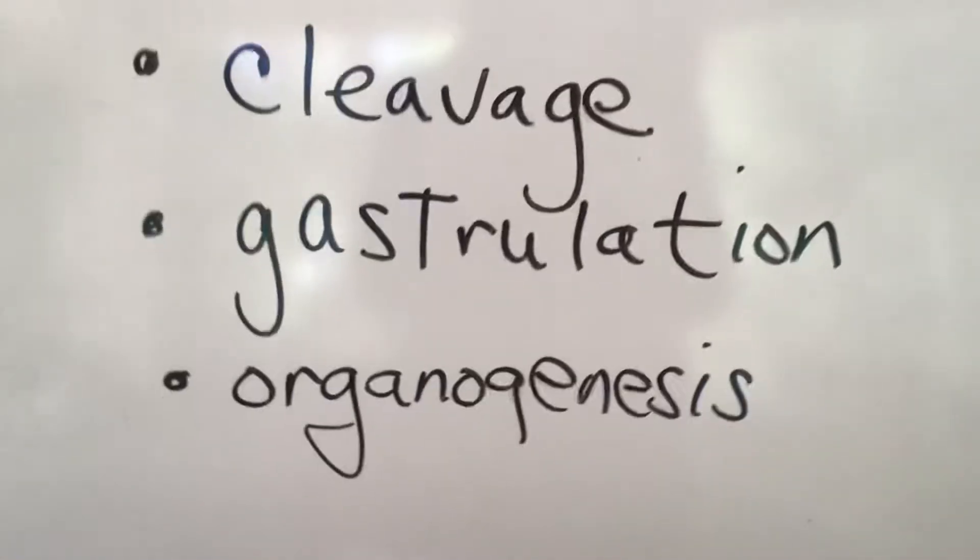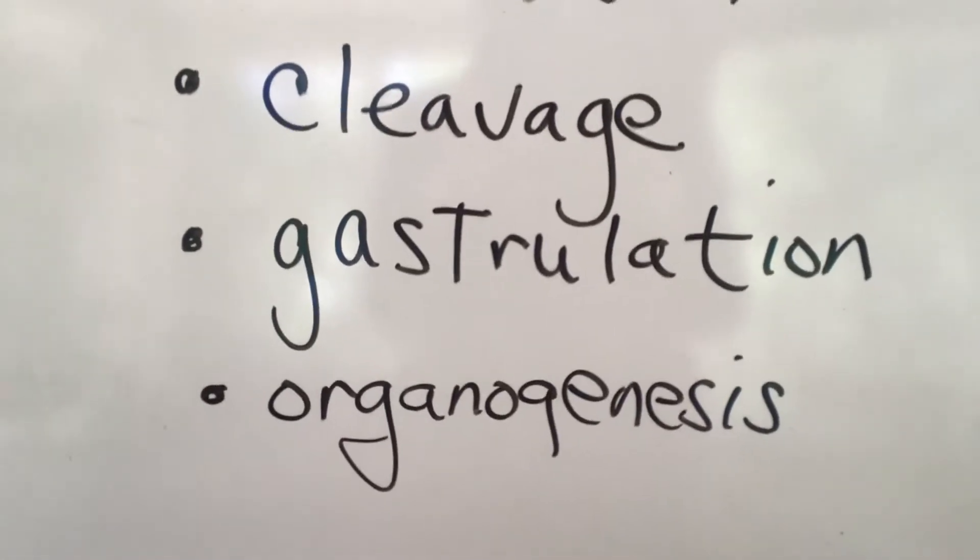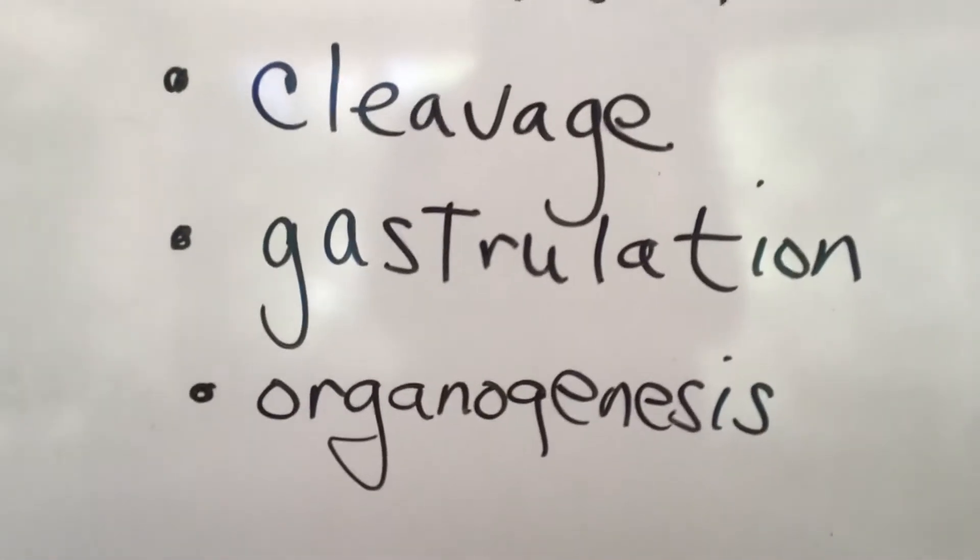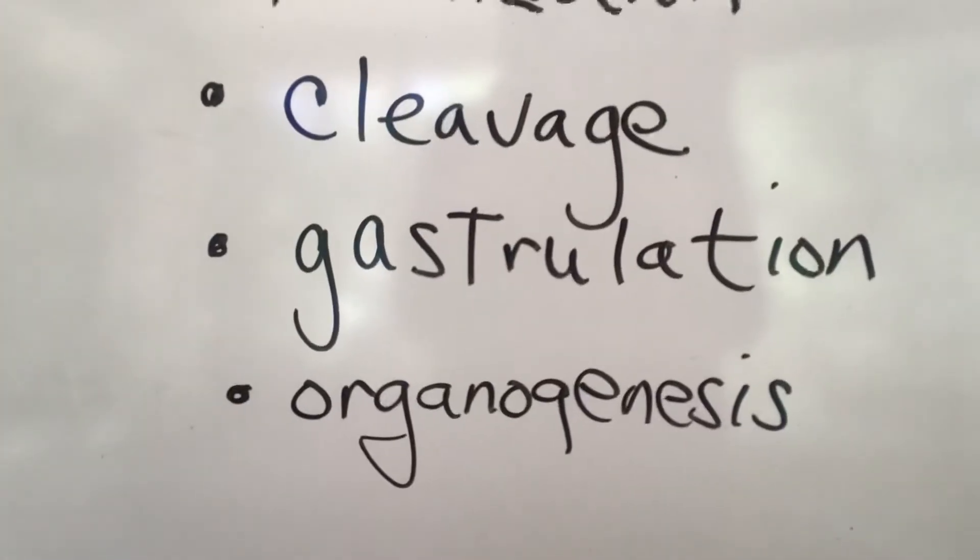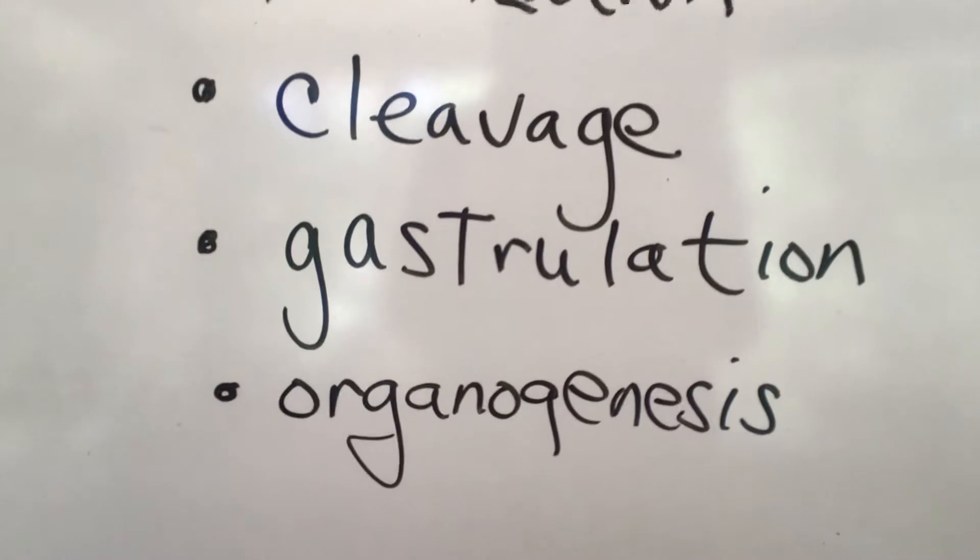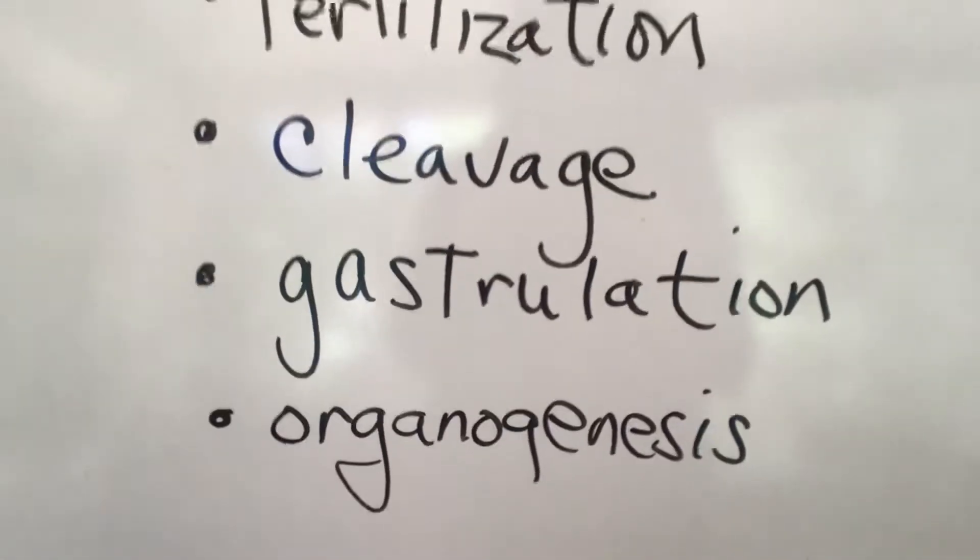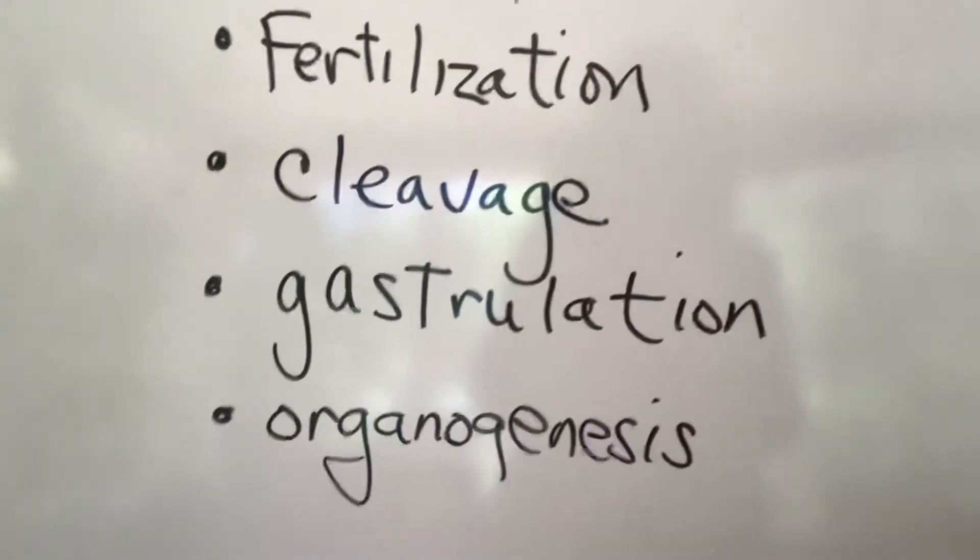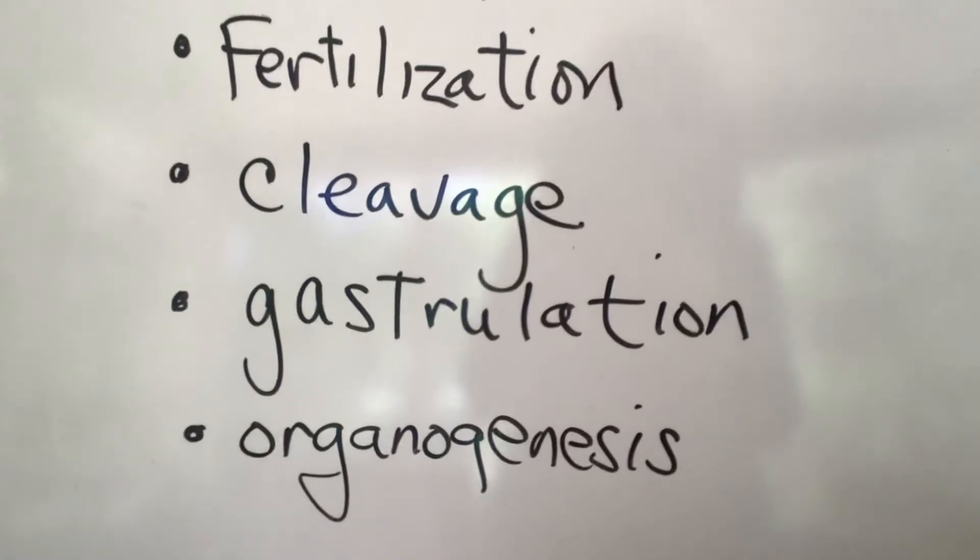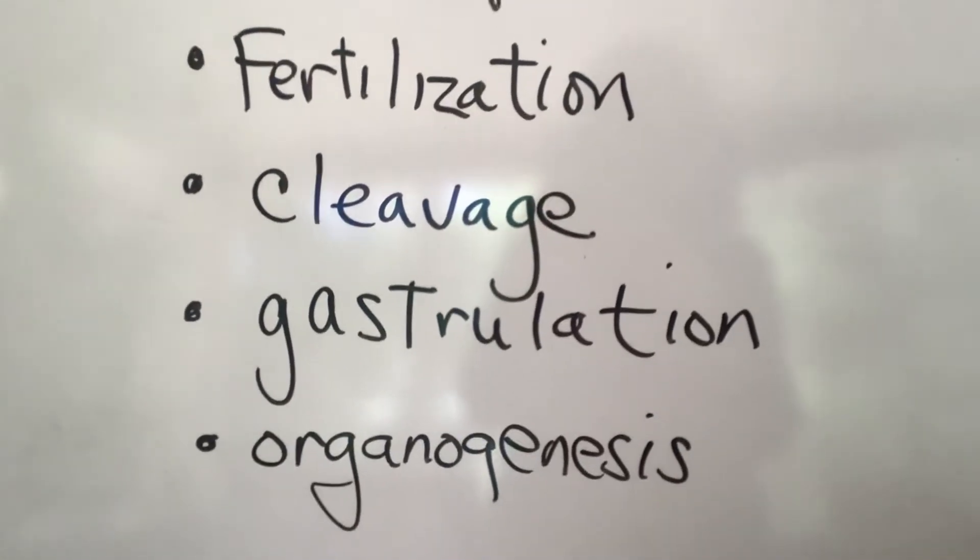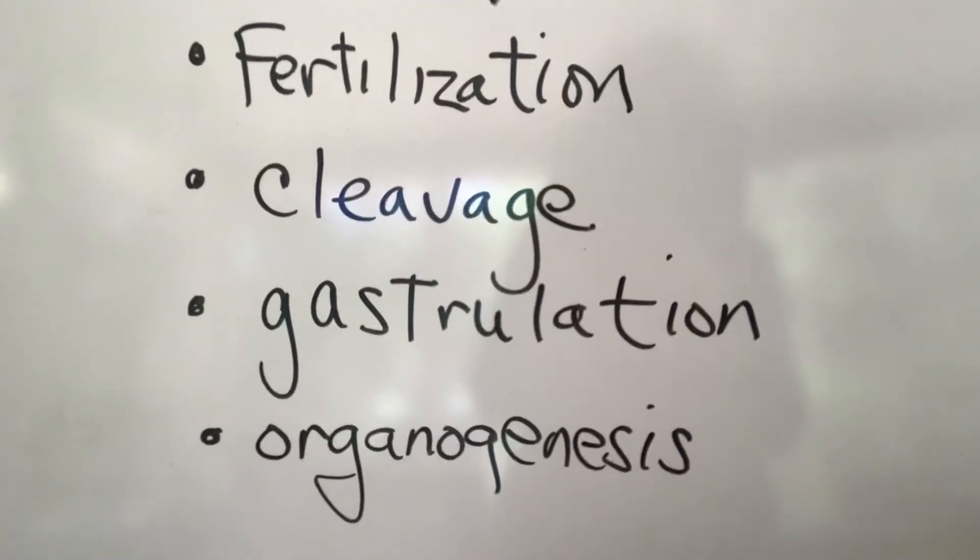Again this is a very complicated subject and a bit different for different kinds of organisms. Organogenesis of course is just the development of the organs, and this is happening during the first trimester. So all of this is happening pretty quick to the zygote after it meets up with the sperm.